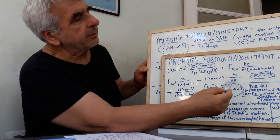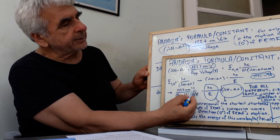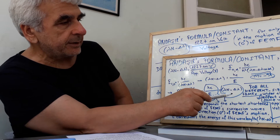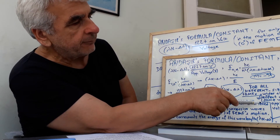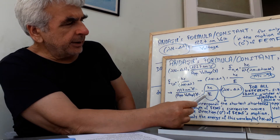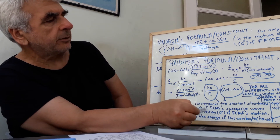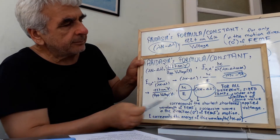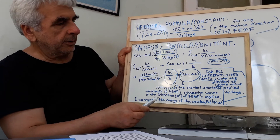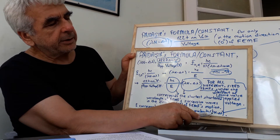According to my energy formula, Lambda-N minus Delta Lambda is equal to Hc divided by E. Voltage and voltage cancel each other. This is valid for all different sized tri-electron motion forms under the effect of the same applied voltage. Hc divided by E, or Lambda-N minus Delta Lambda, corresponds to the shortest shortened wavelength of free electron motion forms' successive waves in the zero-degree direction of free electron motion. E — energy — corresponds to the energy of this wavelength, Lambda-N minus Delta Lambda.